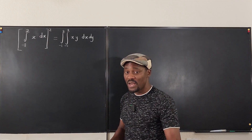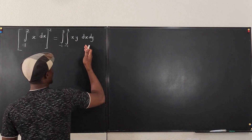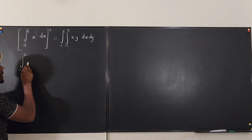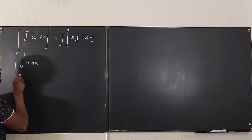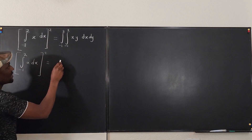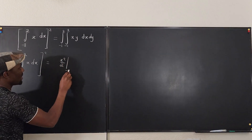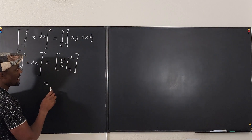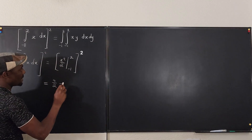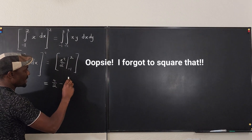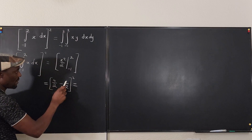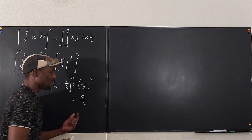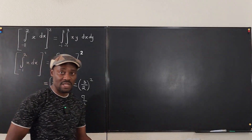Let's start with what we know. We can integrate this expression, and we want to show it's the same as the right-hand side. So we take the integral from minus one to two of x dx, squared. Integrating gives x squared over two, evaluated from minus one to two — that's four over two minus one over two, which equals three over two. Squaring that gives nine over four. So we should get nine over four from the double integral as well.